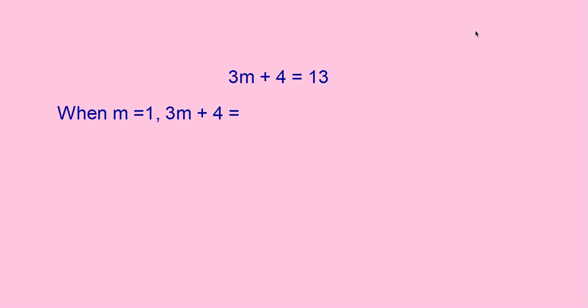Let me take an equation: 3m plus 4 is equal to 30. When m is equal to 1, what is the value of 3m plus 4? That is 3 into 1 plus 4, which is 3 plus 4, which is equal to 7.